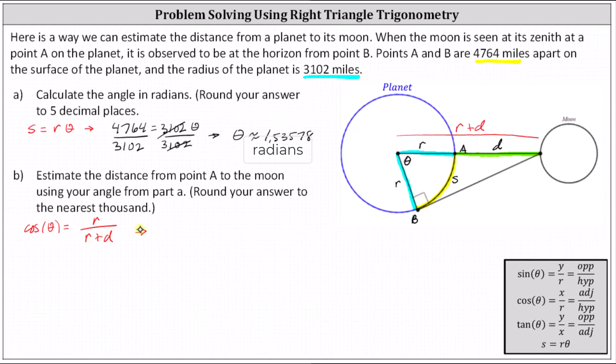Substituting in the information that we have, we have cosine of 1.53578 radians equals the radius of 3,102 divided by the sum of r and D, which is the sum of 3,102 and D.